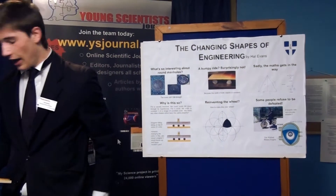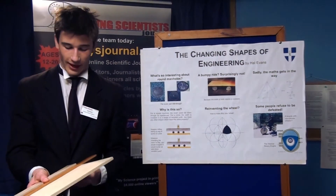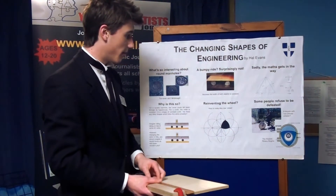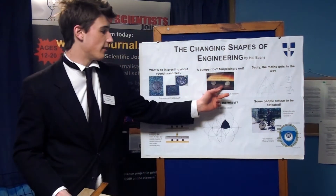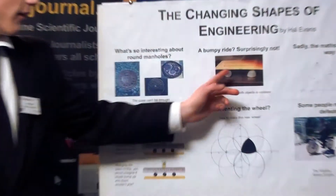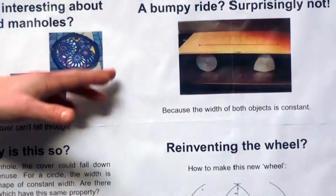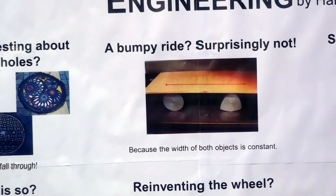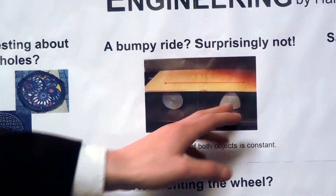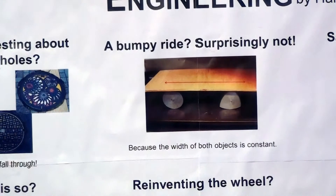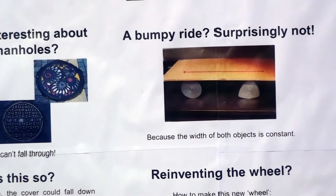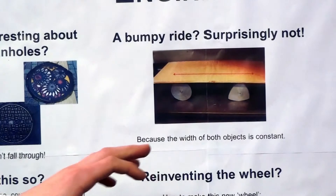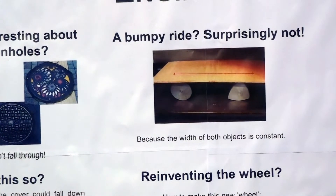In my research, I discovered that there was a simpler shape. And this shape is this piece here. You might expect, if you were to roll this board left and right, that this right-hand side bobs up and down. However, in actual fact, it doesn't. And that's because the width of this piece is constant, and so is the circle.